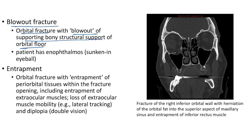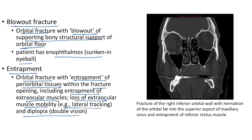Blowout fracture is an orbital fracture with blowout of the supporting bony structural support of the orbital floor. The patient will have enophthalmos (sunken eyeball). Blowout fracture is usually associated with entrapment of periorbital tissues within the fracture opening, potentially involving extraocular muscles — loss of extraocular muscle mobility causing lateral tracking and diplopia.